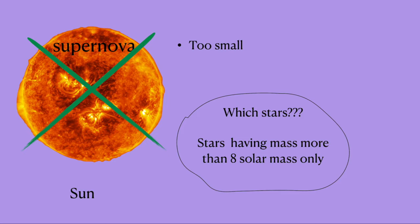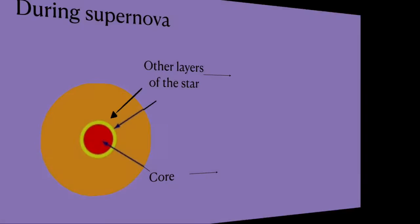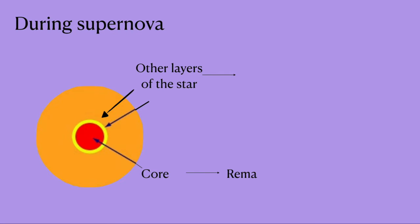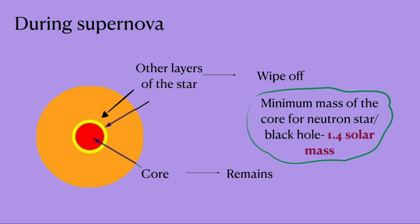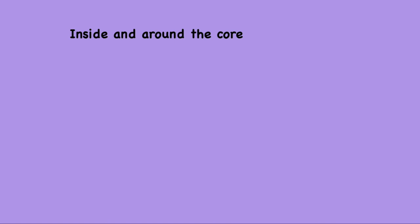The resultant of the supernova will only be the core of the star as the other layers of the star wipe off during the process. The mass of the core could be anywhere above 1.4 solar mass for that star to become a neutron star or a black hole. Most of the protons and electrons get pressurized and fuse, forming neutrons in the core, which is the reason the star is called a neutron star.